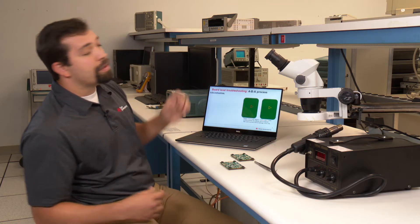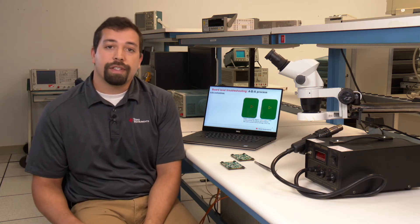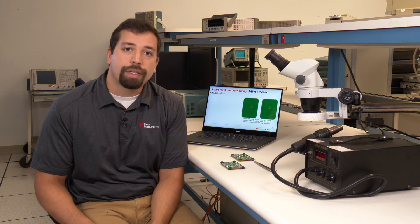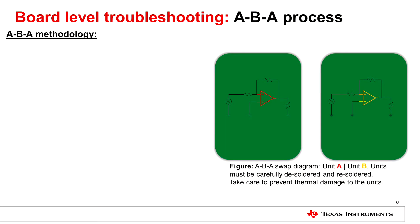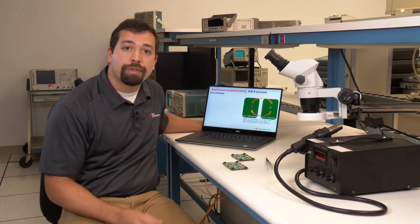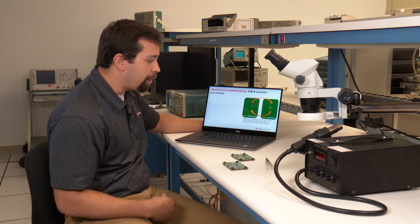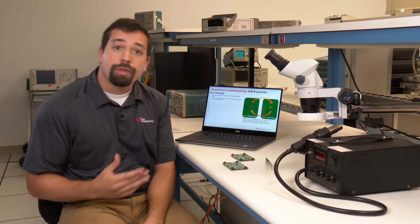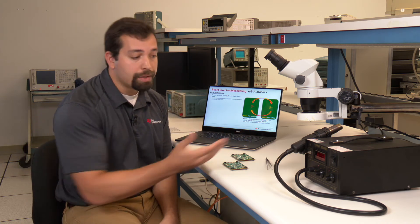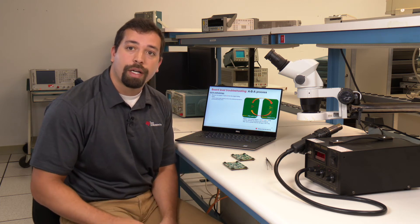Now that we've discussed the ABA swap benefits, let's go into more detail about the ABA swap process. The ABA swap methodology starts with two printed circuit boards and two devices, device A and device B. The first step is to remove the integrated circuit from the printed circuit board. TI recommends utilizing a solder rework station, such as a heat gun, to complete this process.